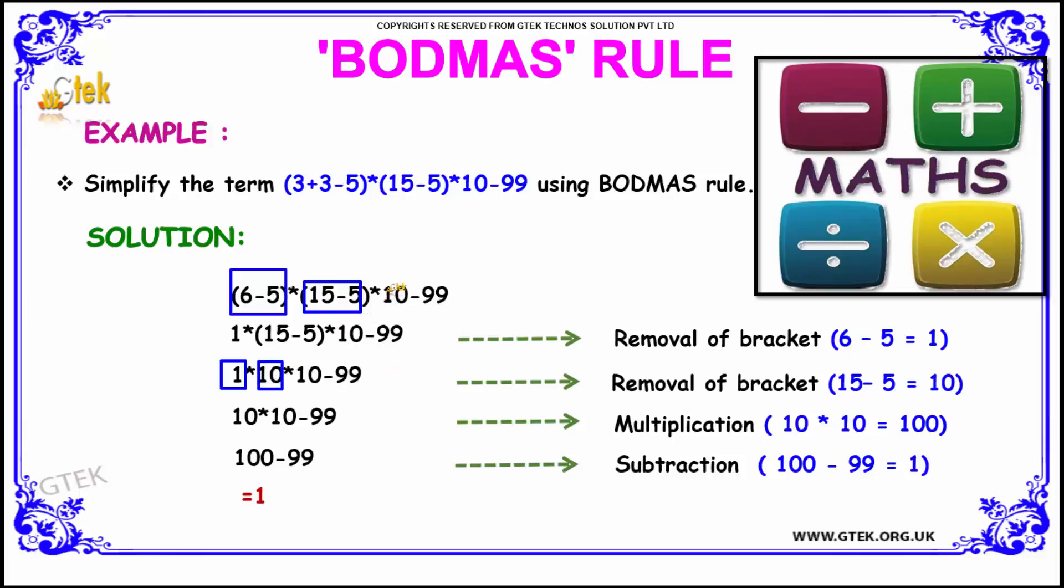So on simplifying this equation, we get 1×10×(10-99) which implies 10×10-99 which equals 100-99 which is equal to 1, where 1 is the answer.